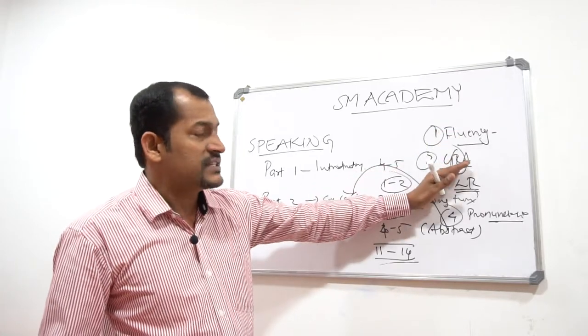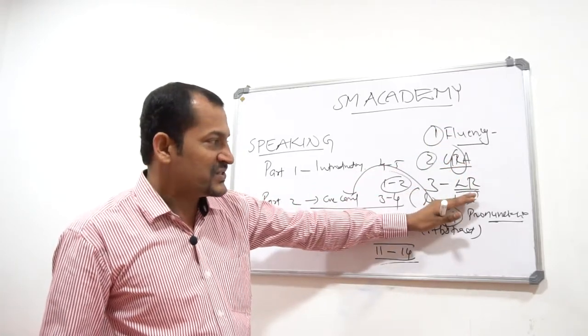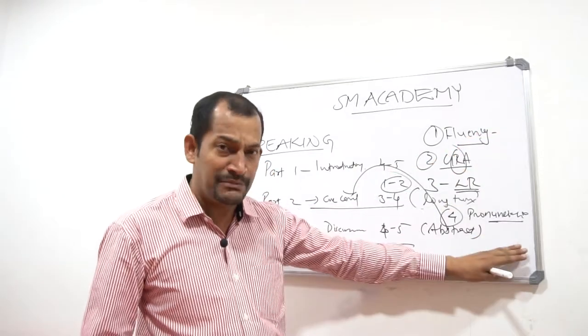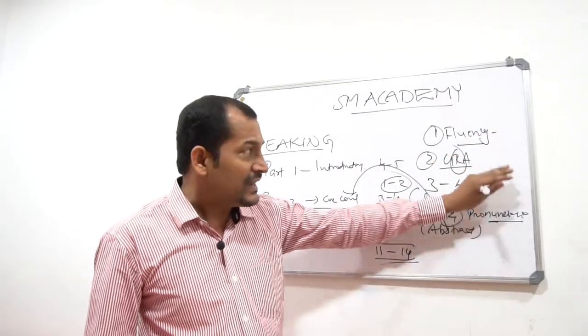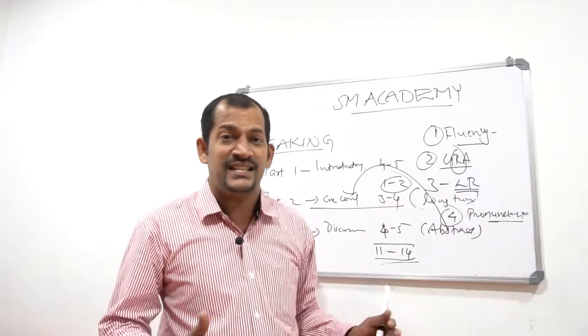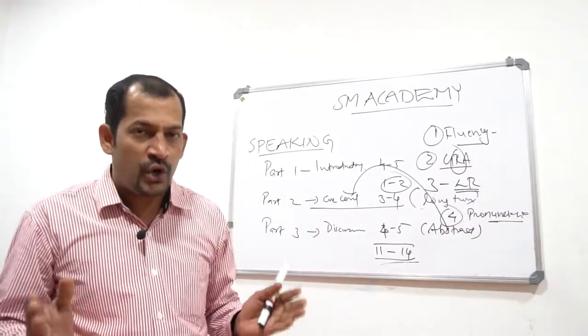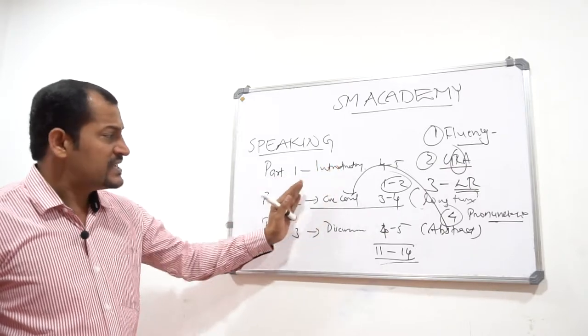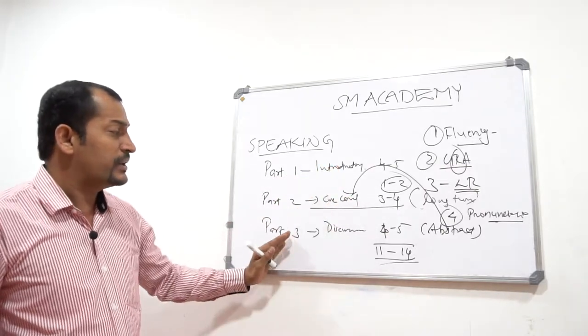So, first one is fluency, second one is grammar, third one is lexical resource, and fourth one is pronunciation. These are the grading marking indicators used for measuring and assessing your skills in speaking, in spoken conversation. Coming back once again, Part 1 is an introductory session, second one is a cue card, and third one is discussion.